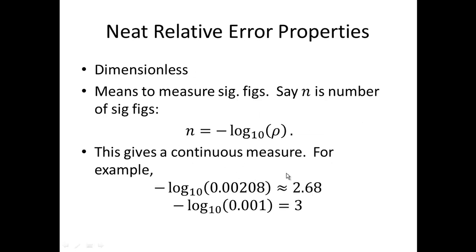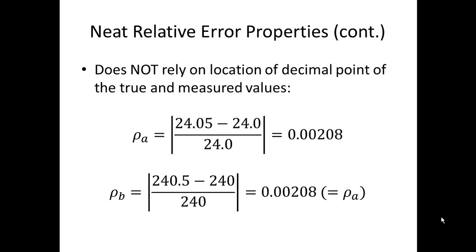Let's look at some interesting properties of relative error. First, it's dimensionless. Second, you can get a number representative of the number of significant figures from the relative error. If I have a relative error rho and I take the base-10 log of it and negate that, I get a value n which represents the number of significant figures. This is a continuous measure. For example, 0.00208 when I take the log base 10 and negate it, I get about 2.68, showing I'm near three significant figures. And if I take the base-10 log of rho-three-star, the 0.001, and negate that, I get the 3 that I desire. Relative error does not rely on the location of the decimal point of the true and measured values.